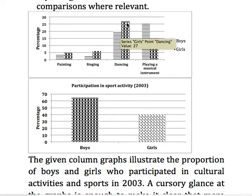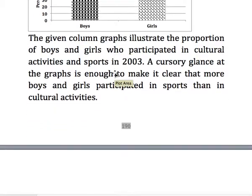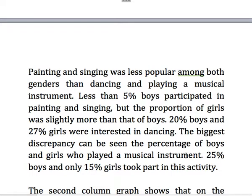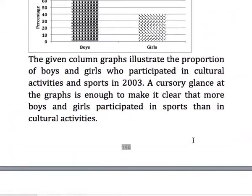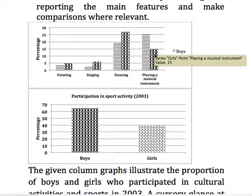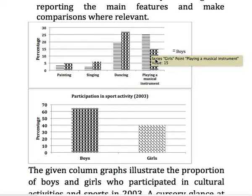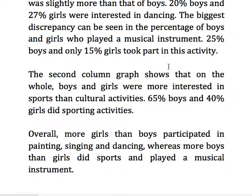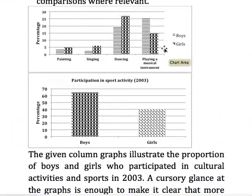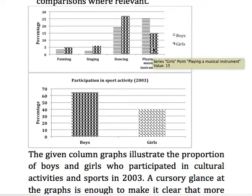The biggest discrepancy can be seen in the percentage of boys and girls who played a musical instrument — 25% of boys and only 15% of girls took part in this activity. In this first paragraph, all four cultural activities have been covered with comparisons and use of the comparative form of adjectives.